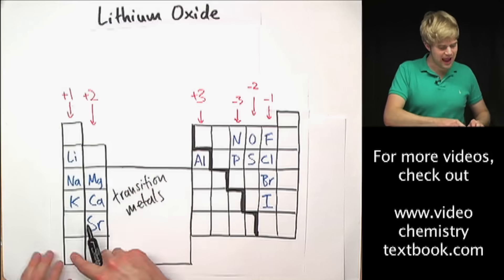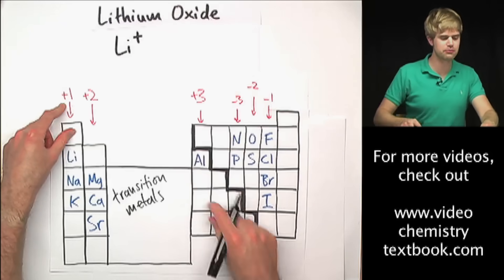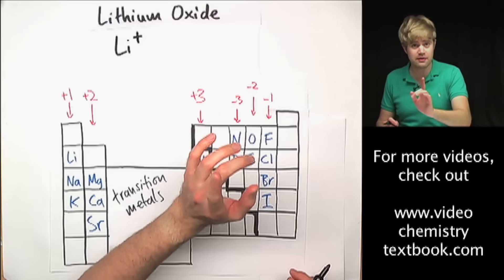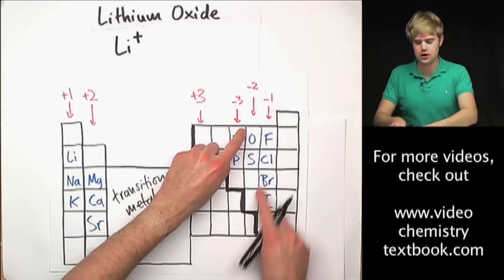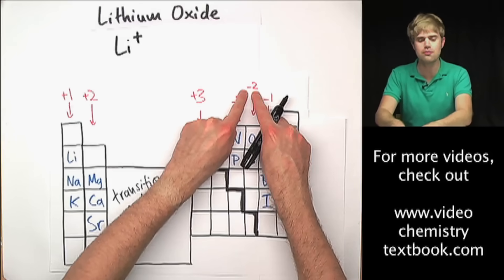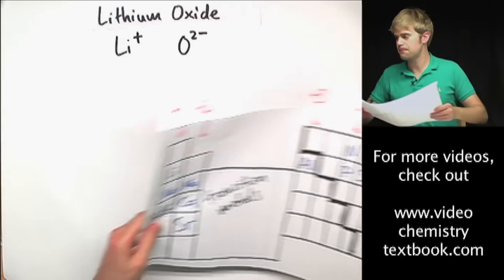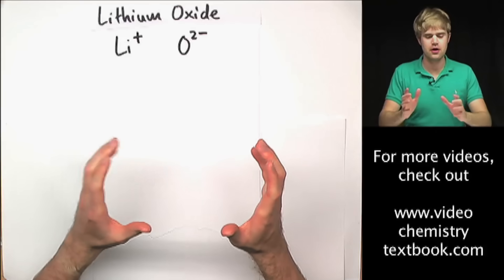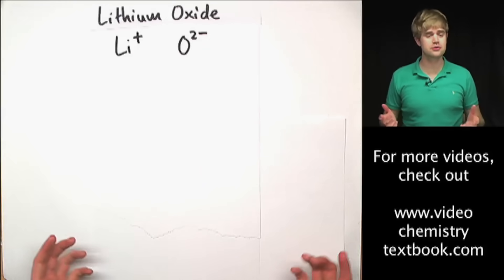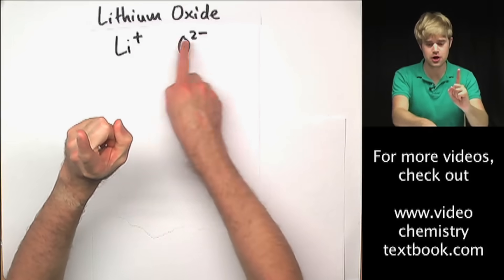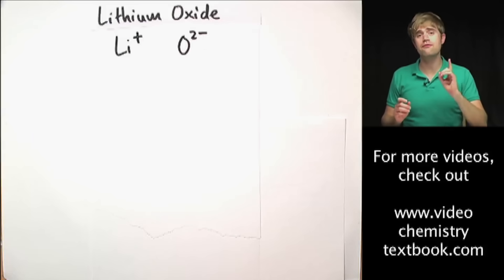Lithium lives in this column, and everything in this column has a plus one charge, so I'll write Li 1+. Everything in the next column has a 2+ charge, then a 3+ charge — you might want to write this on your own periodic table for reference. Everything in the oxygen column has a 3− charge, and oxygen, which lives in this column, has a 2− charge. So we have Li 1+ and O 2−. Now I ask myself: does the plus charge and the minus charge balance when I have one atom of both? The answer is no, because I have one plus charge but two minus charges.